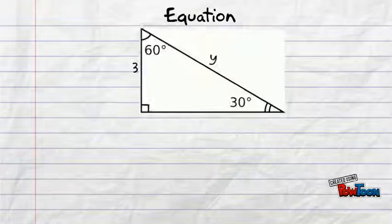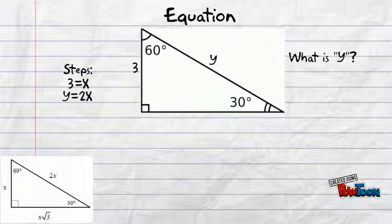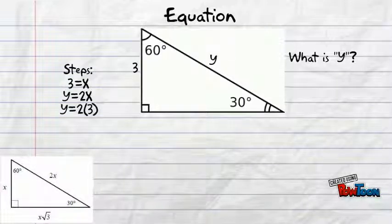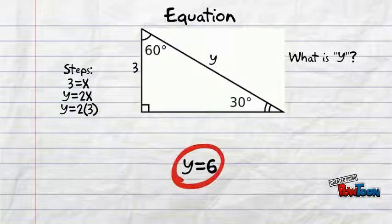Let's try a problem. In this problem, 3 is the x value, and y represents the hypotenuse, which is 2 times x. To find y, we simply have to multiply 3 by 2. The answer is 6.